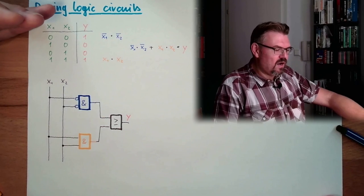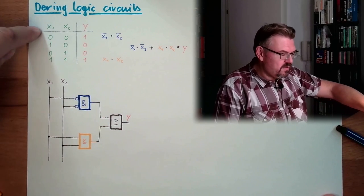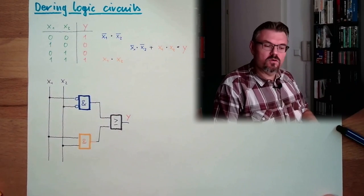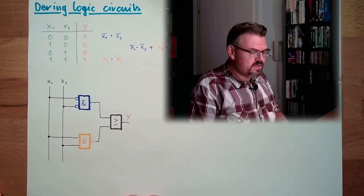This is how we get from the Table of Truth to a Boolean Algebra to the logic circuit. All right? Maybe let's make another example.